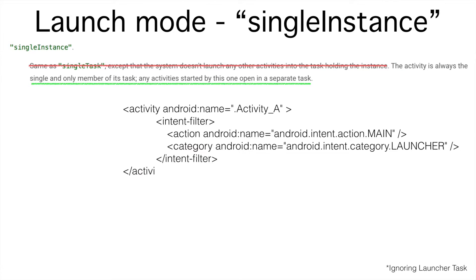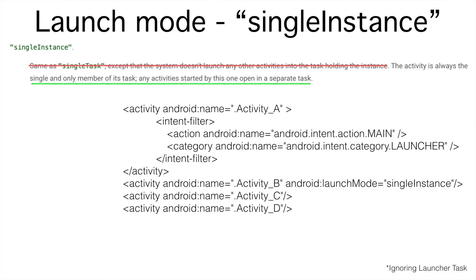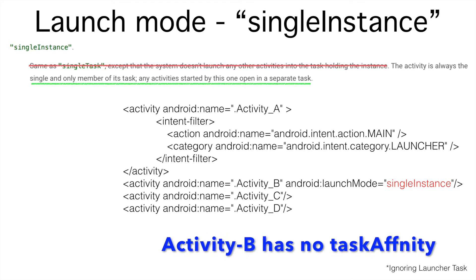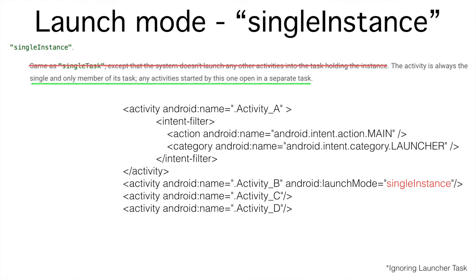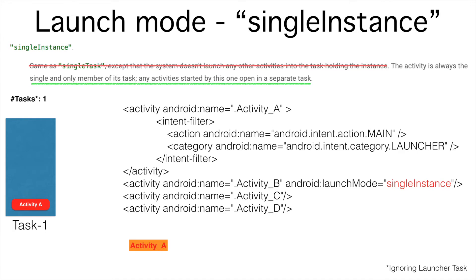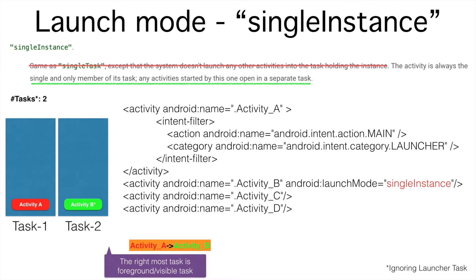Assume that this is the declaration of activities in the manifest file, with activity B having the launch mode as single instance. Note that I have not put any affinity on activity B for now. When I start activity A, that is the state of the task, and next when I launch activity B, it will be launched as part of another task.